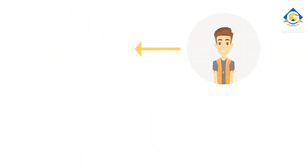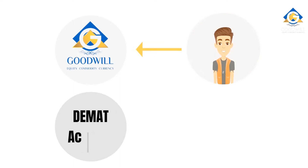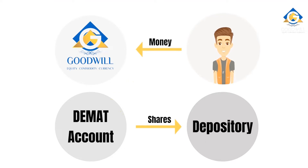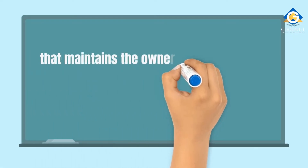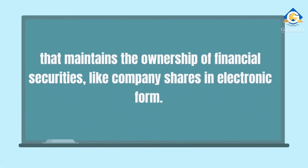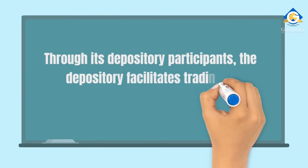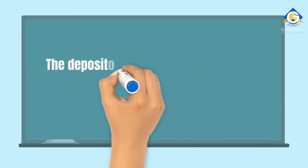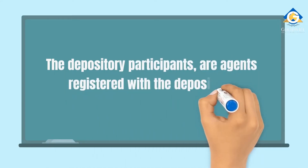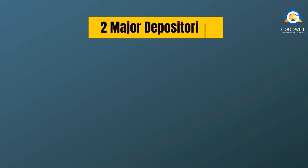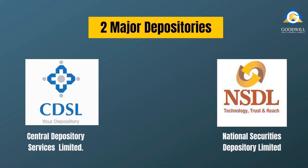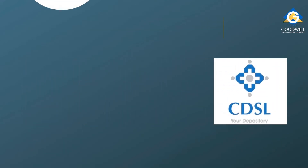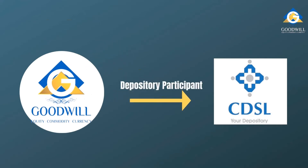When Rahul opened his trading account with Goodwill, the broker also opened up a Demat account — a dematerialized account — with the depository. A depository is also a market intermediary that maintains the ownership of financial securities like company shares in electronic form. Through its depository participants, the depository facilitates trading in dematerialized securities. The depository participants are agents registered with the depository. There are two major depositories in India: the CDSL, Central Depository Services Limited, and the NSDL, National Securities Depository Limited. Rahul's stock broker, Goodwill, is also a depository participant (DP) for CDSL.